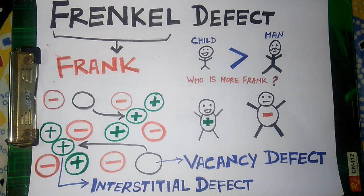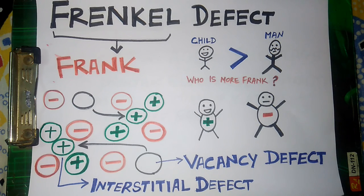Frenkel defect is shown by many solids, and in all of them the cation is smaller. So let's move on to the next defect, which is the Schottky defect.